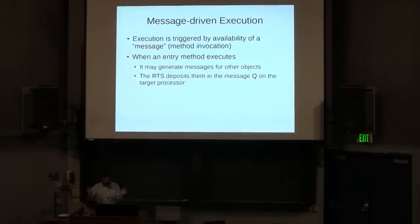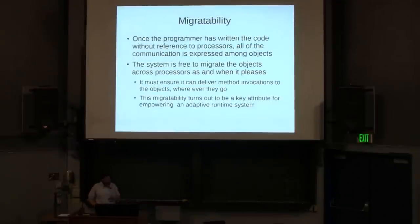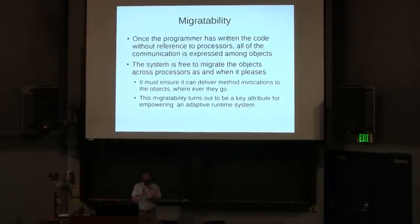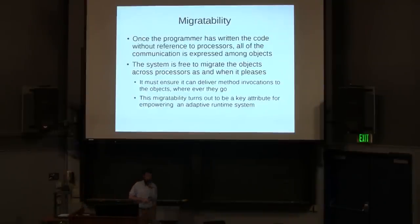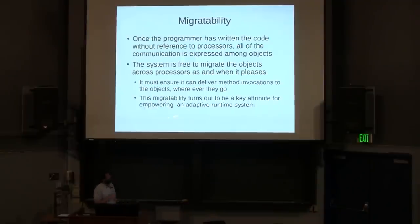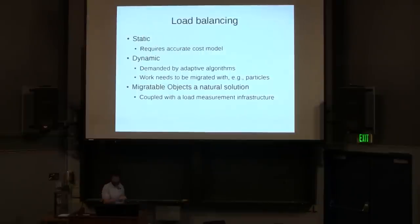Once you've got your program mapped out like this, it's the runtime's job to place these objects on processors. These special globally visible objects have the property that they can be transparently moved between processors. The runtime will do that automatically, or you can do it manually. It has a system of keeping track of where each object is. This is a key component for load balancing.